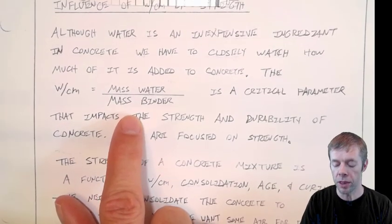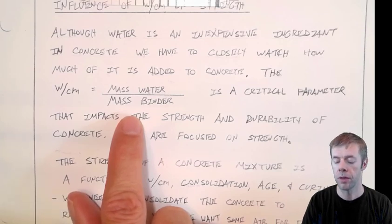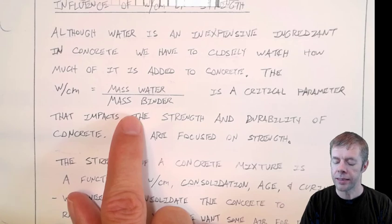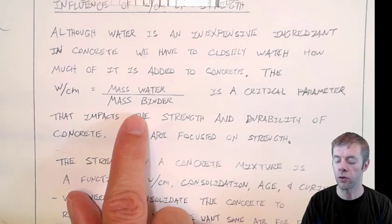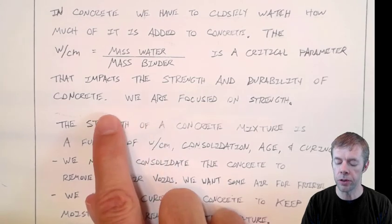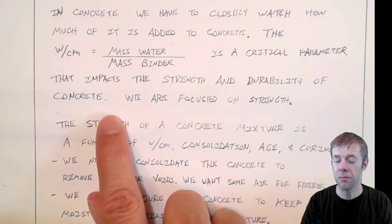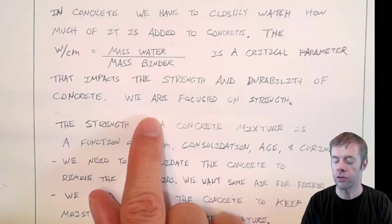Water-to-cement ratio. This concept was first developed by Abrams in about 1910. He says the mass of the water divided by the mass of the binder is equal to the water-to-cement ratio. This is a very, very critical factor, and it's going to impact the strength and also the durability of our concrete. But today we're just going to talk about strength, and I'll explain why in a future video.